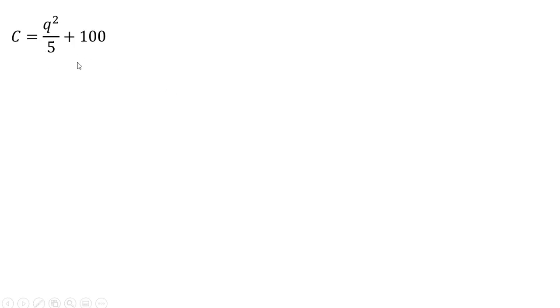So once again, the firm's total cost of production. We're now going to get marginal cost, taking the derivative of this equation. So we get 2Q divided by 5 for the marginal cost.